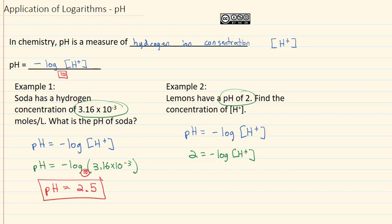What's different this time, though, is we need to solve for that hydrogen concentration. But before we convert to an exponent, we have to take care of the fact that there's a negative in the way. So what we can do to fix that is we can multiply both sides by negative 1. And when we do, we get negative 2 is equal to the log of the hydrogen concentration.